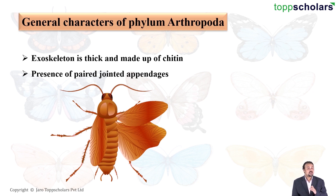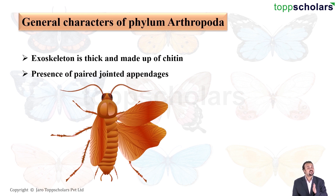Moving on, there is the presence of paired jointed appendages. We have two, then two more below, and finally two more at the lowest pair, giving a total of six appendages — as usually seen in insects. To learn more, download the Top Scholars app.